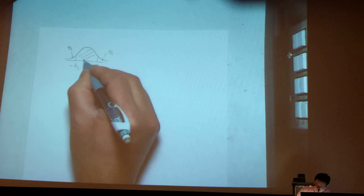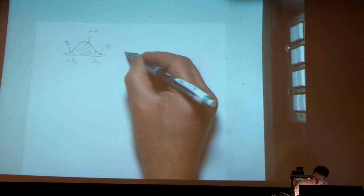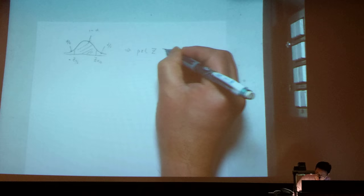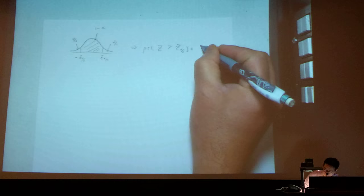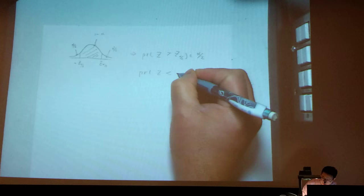So basically we can interpret this one in terms of probability statements. The probability that z is bigger than z alpha divided by 2 equals alpha divided by 2. And the probability that z is less than negative z alpha divided by 2 is another alpha divided by 2.